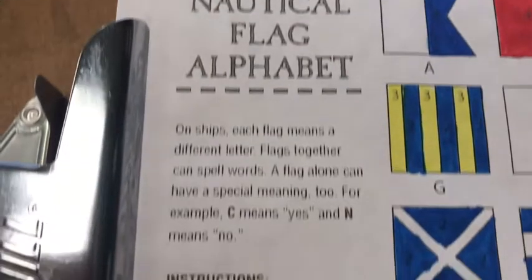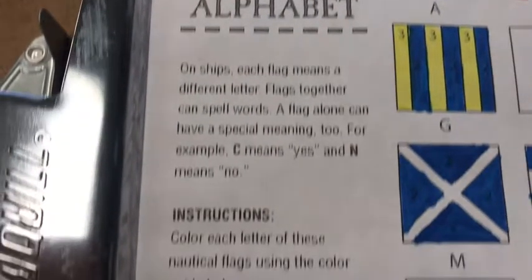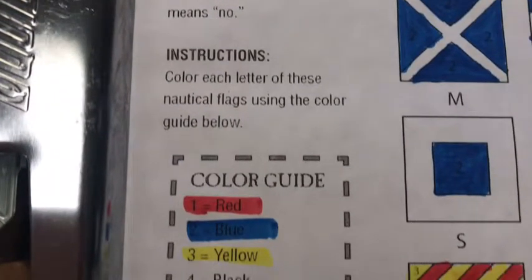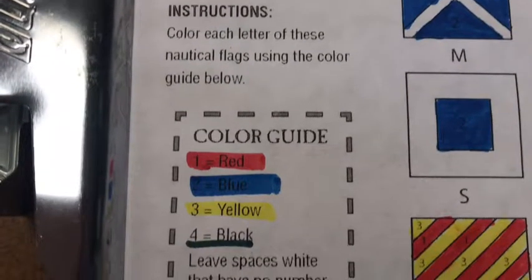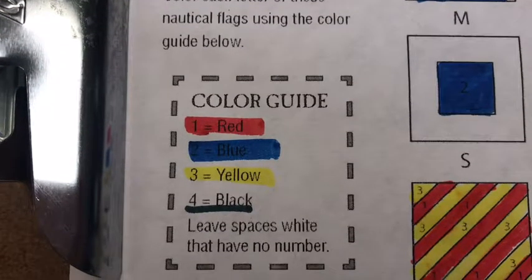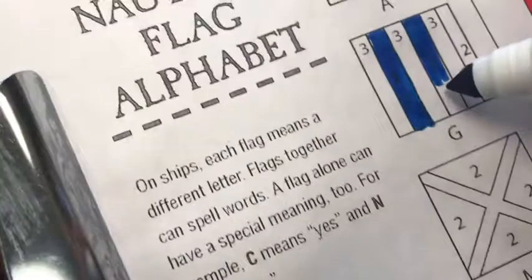Please put your name at the top of the nautical flag alphabet worksheet and then create a color code. Fill in red for number one, blue for number two, three is yellow and four is black.